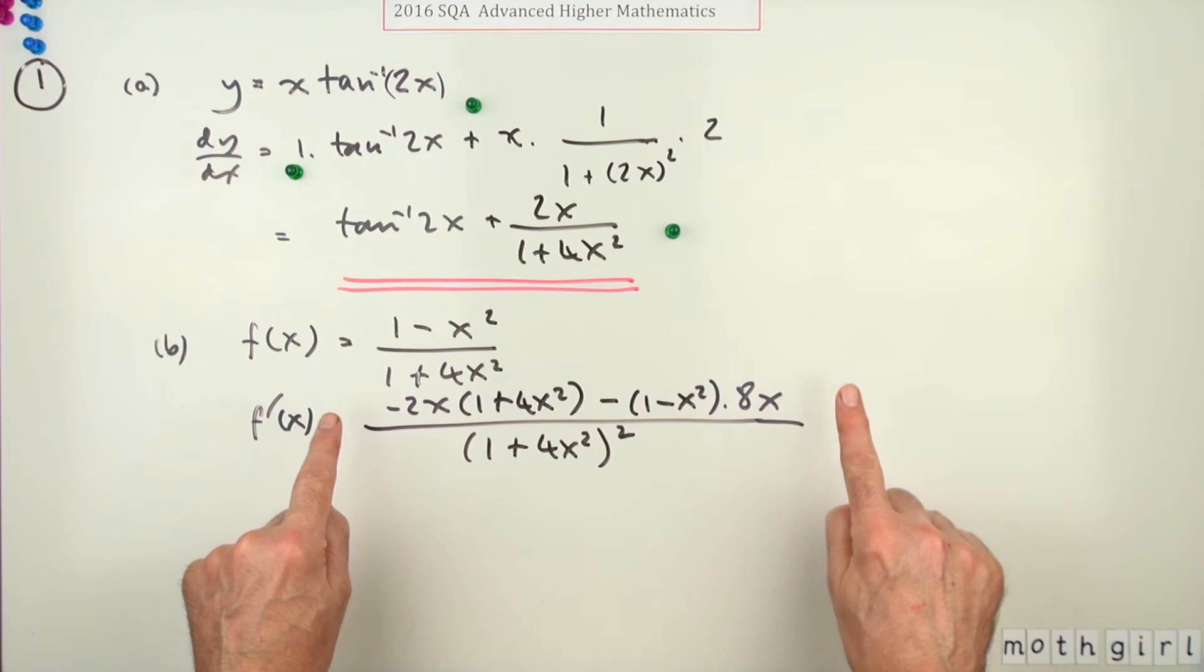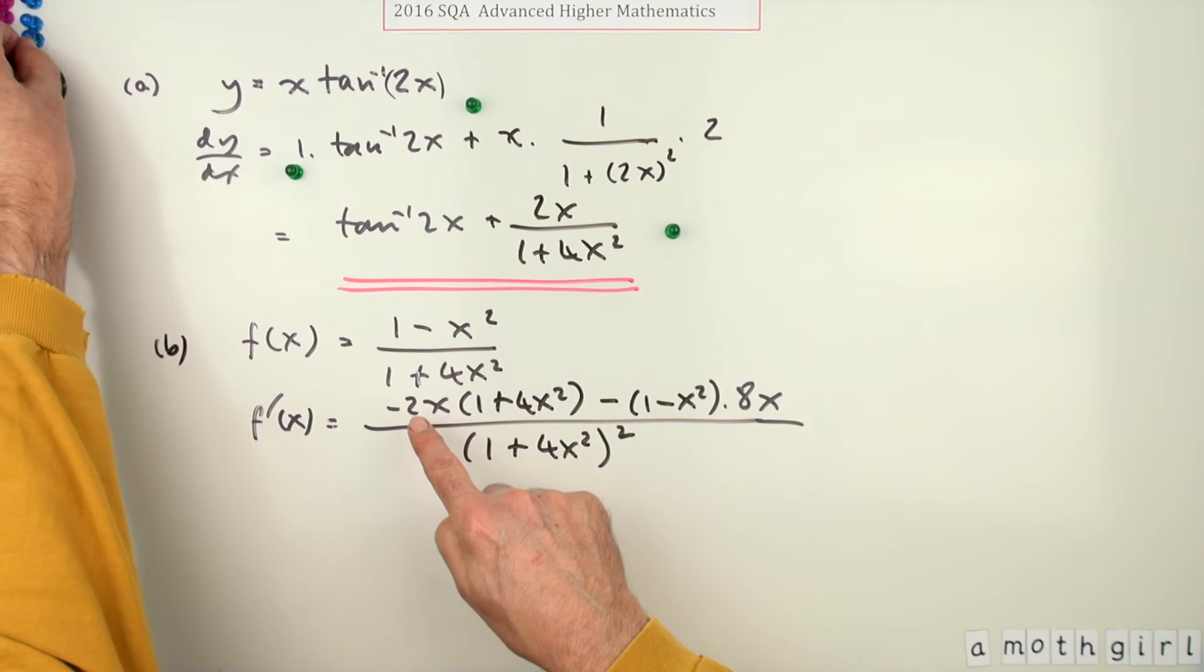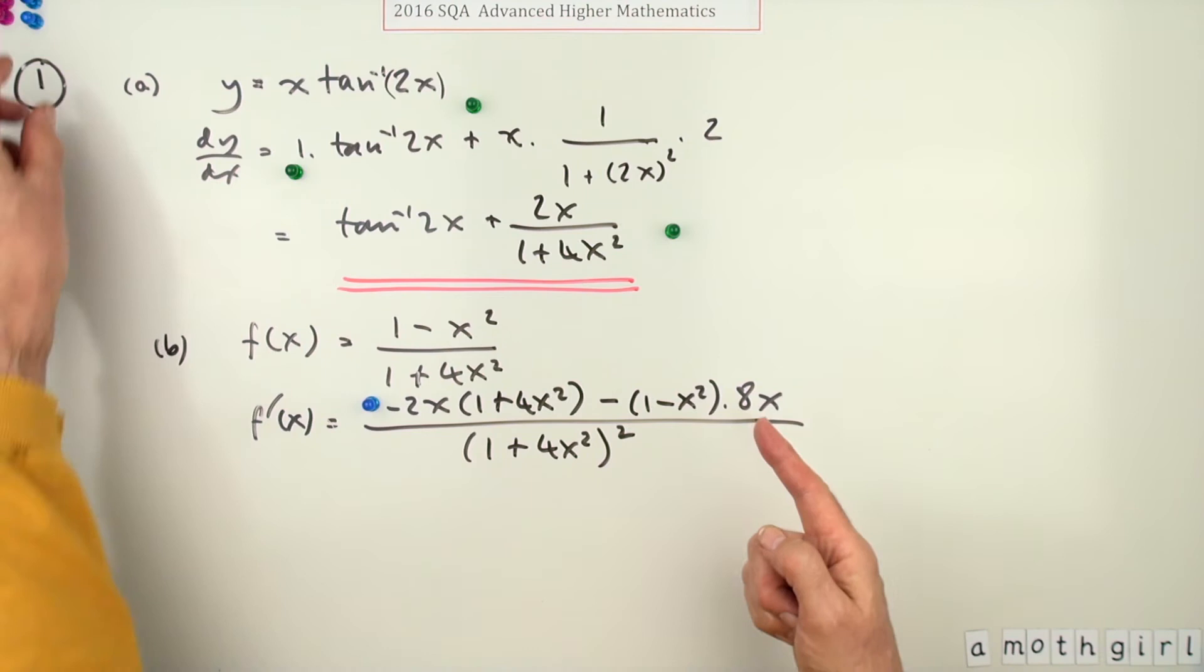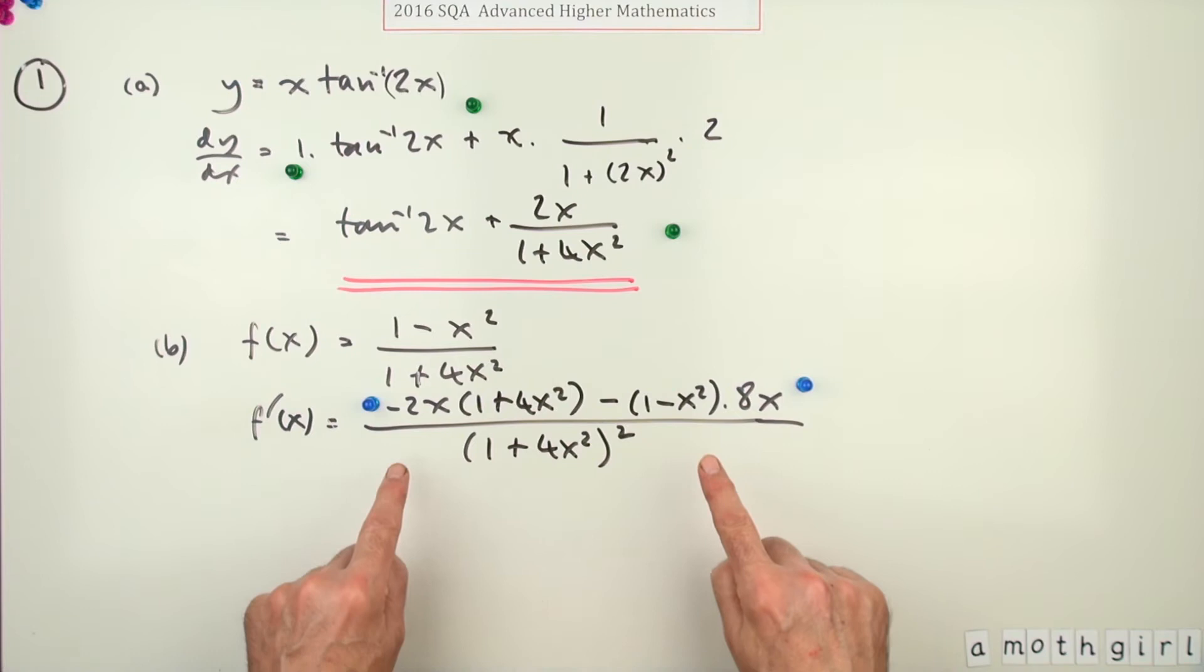Now the way the marks were split up this time was there was one mark for using the quotient rule and differentiating one of the terms, so it would probably just be the first one you did. The second mark was for then differentiating the other term, so the second mark appears there. Then the last mark is just for tidying up.